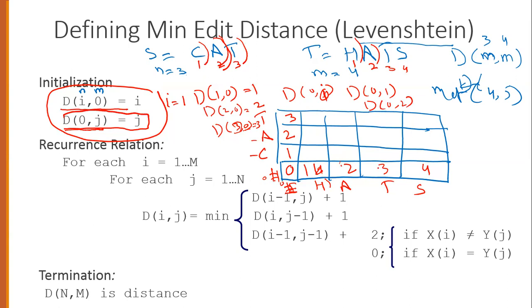We want to compute D[N,M], the actual minimum edit distance between the full source and target strings. We need to compute the cost for all substring pairs and accumulate the cost. After initialization, for i from 1 to N and j from 1 to M, we compute each cell.